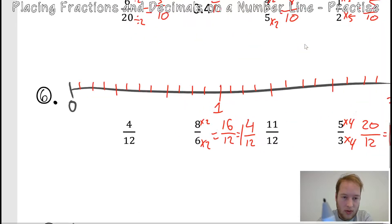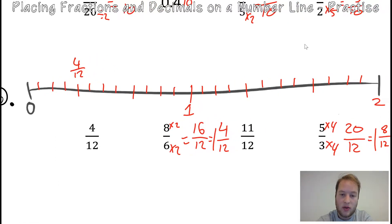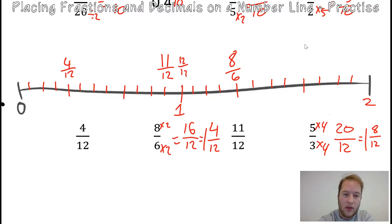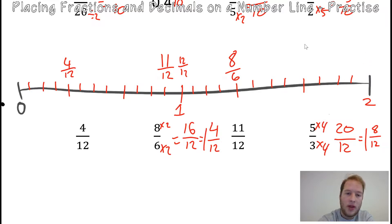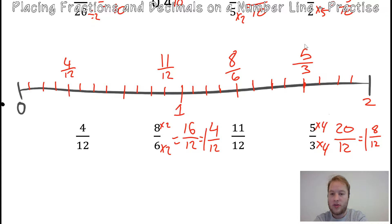At four twelfths: one, two, three, four — that's four twelfths. At eight sixths, that was the same as one and four twelfths: one, two, three, four — so one and four twelfths here, but we write it as eight sixths. Eleven twelfths is just before the one whole. At the one whole, that would be twelve over twelve, and two would be twenty-four over twelve. Our final one — one and eight twelfths: one, two, three, four, five, six, seven, eight — so this would be five thirds, which is one and eight twelfths across the line.